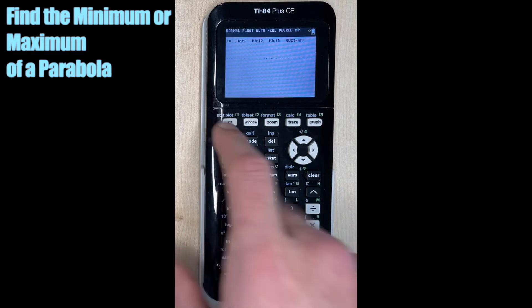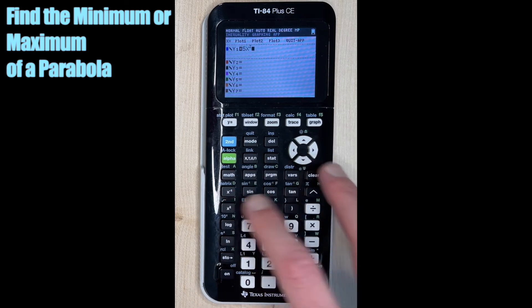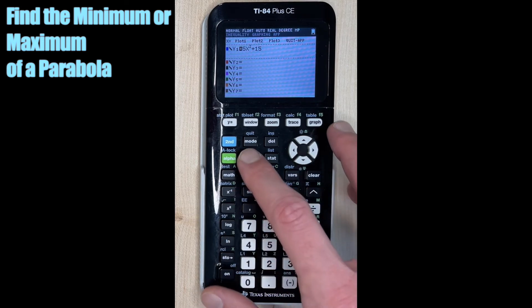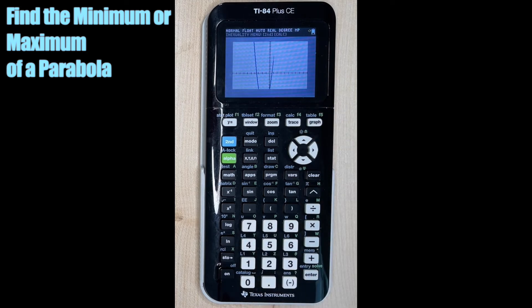Let's go back and graph another function to find the minimum. So let's do 5x squared plus 15x minus 10. Let's hit graph and see what we have. Okay, so now we need to adjust the window again.